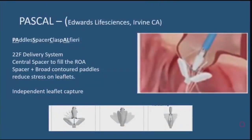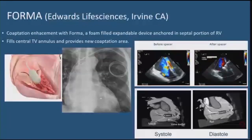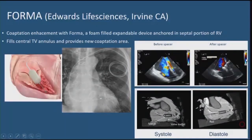The PASCAL device, made by Edwards LifeSciences, is a spacer attached to paddles that help anchor the leaflets. It has the ability for independent leaflet capture. In compassionate use, TR reduction and improvement in functional status were achieved, with no conversions to surgery. The trial for this device is starting to enroll. The FORMA device achieved coaptation enhancement by anchoring a foam-filled cylinder to the septal portion of the RV and exiting through a vein. It reportedly showed TR reduction and improved functional status, but the FDA has stopped this trial.